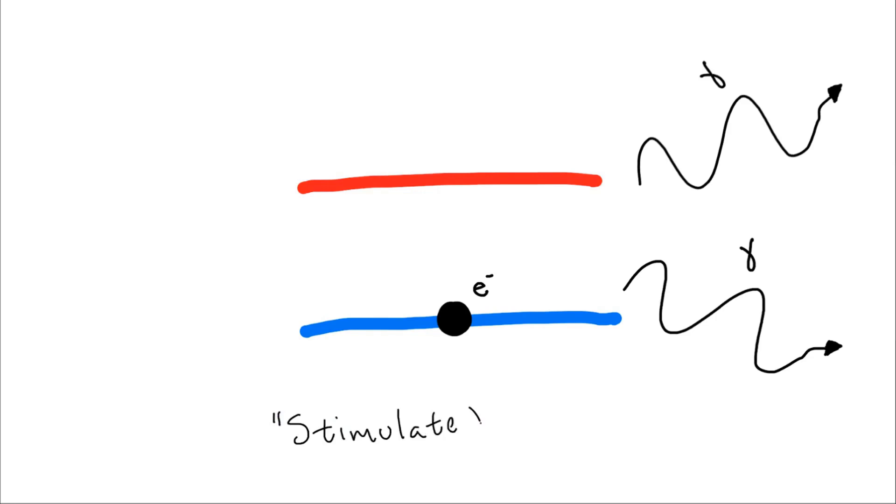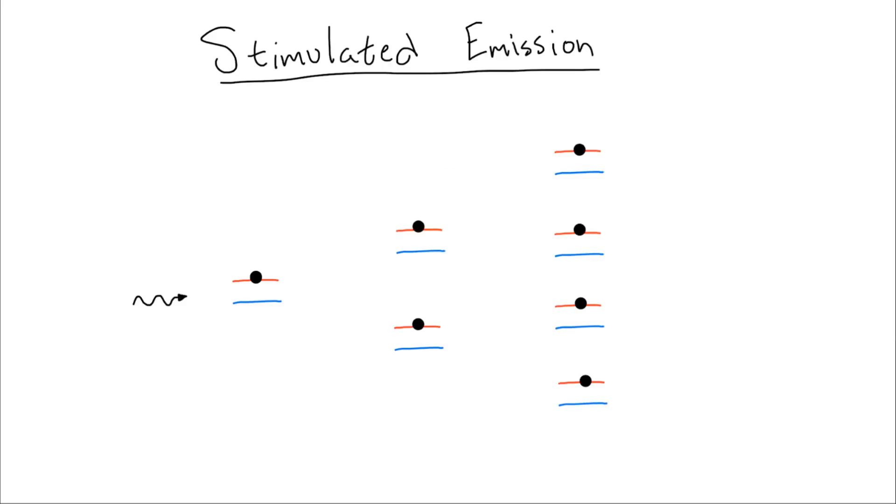This is called stimulated emission. So, if we are able to pump a bunch of electrons into a long-lived excited state with, say, an electrical current, when one decays it will emit a photon of exactly the energy needed to force another electron to decay. So one photon becomes two, and two becomes four, and four becomes eight, and so on.